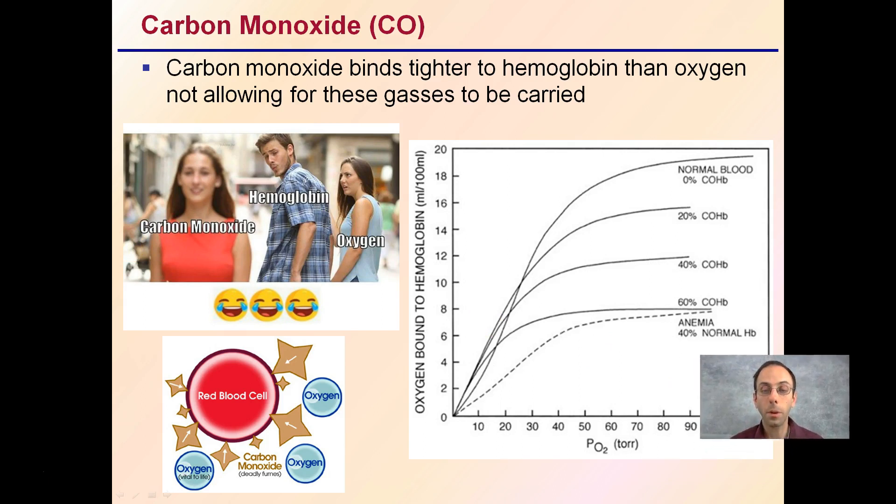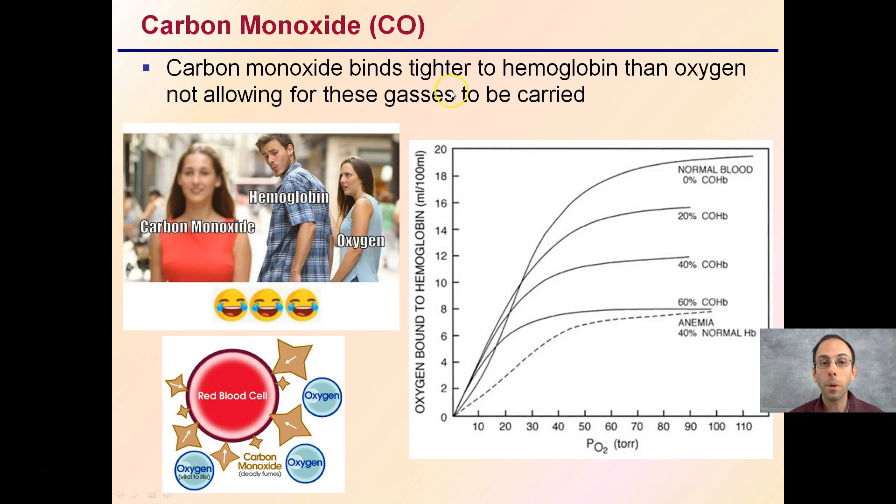Something in the news that you hear quite a bit is carbon monoxide, so I want to make sure I mention that. Carbon monoxide binds tighter to hemoglobin than oxygen, not allowing for these gases to be carried. We're looking at our oxygen bound to hemoglobin, and here's our pressure of oxygen. We're noticing under normal hemoglobin, with no carbon monoxide bound, we can bind this much of our oxygen, a high amount. As we start increasing our carbon monoxide, there's 20% carbon monoxide, 40%, 60%, we see this plateau occurring very early, not allowing us to carry potentially enough oxygen, which could either allow us, in a good case, to pass out or potentially die.